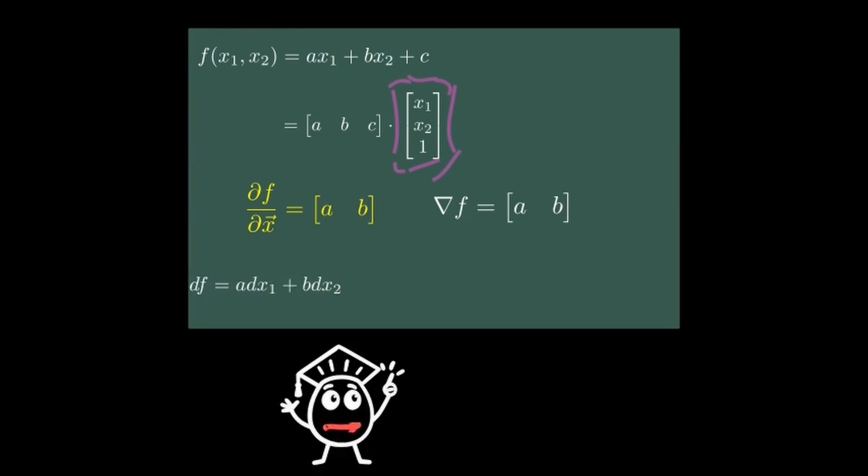Now the total differential again: df = gradient f · [dx1, dx2]. This tells us if you move in the same direction as the gradient, the dot product is maximized—the function increases fastest. If you move perpendicular to the gradient, the dot product is zero—the function doesn't change at all. And that's why the gradient is always perpendicular to contour lines.